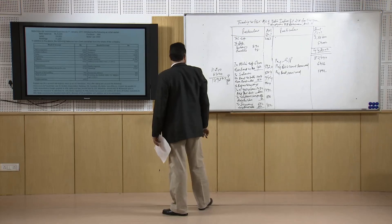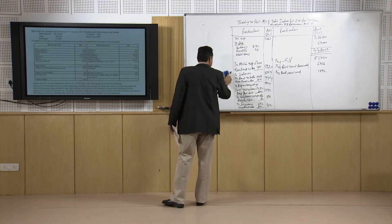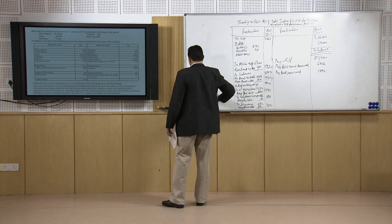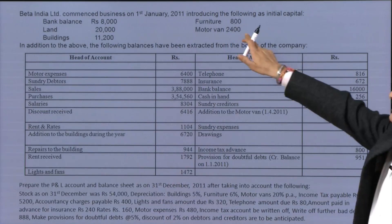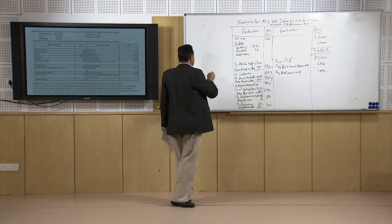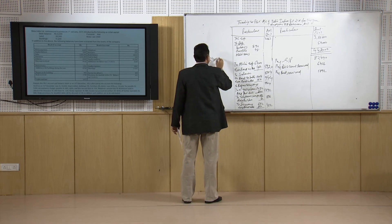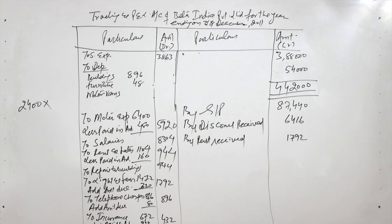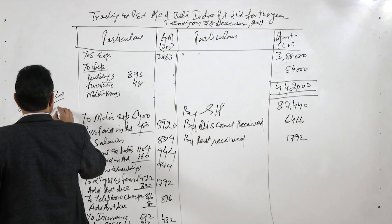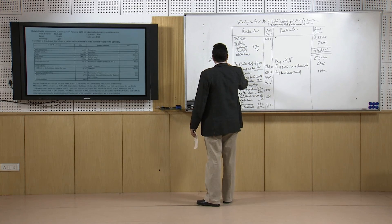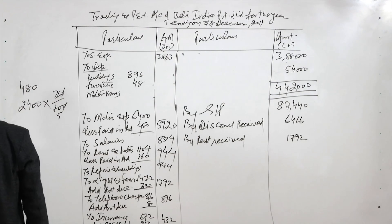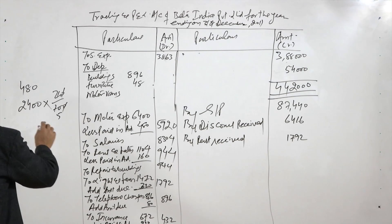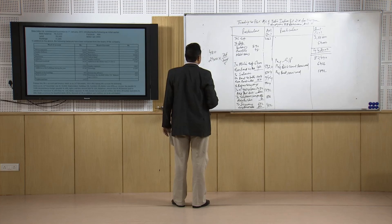Next item is motor vans. We have two amounts given for calculating the depreciation on the motor van. The opening balance of motor vans is 2,400 rupees. You charge depreciation on this for the whole year at the rate of 20 percent, which works out as 480 rupees.